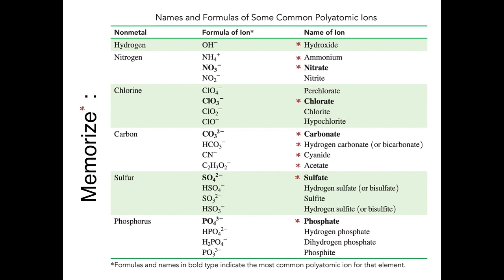You also need to know nitrate, which is NO3, negative one. You need to know chlorate, ClO3, charge negative one. You need to know carbonate, CO3, charge two minus. Hydrocarbonate, or bicarbonate, means the same thing, is HCO3, with charge negative one. Cyanide is CN, charge negative one. Acetate is C2H3O2, that's a long one, has a charge of negative one.